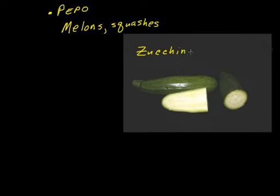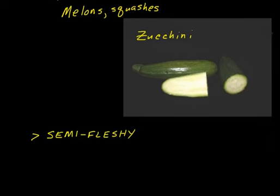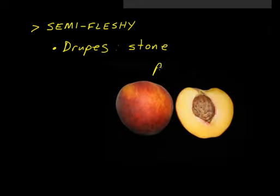The next category of fruits are what we call semi-fleshy fruits. As the name implies, they're not quite as juicy — they have a firmer flesh to them. There are two main types. There are the drupes, which are also known as stone fruits because they usually have a large, singular, very hard seed at the heart of the fruit. A classic example being peaches.